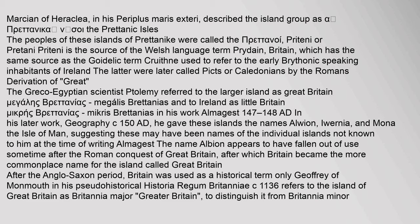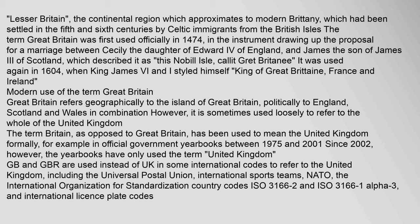The name Albion appears to have fallen out of use sometime after the Roman conquest of Great Britain, after which Britain became the more commonplace name for the island. Called Great Britain after the Anglo-Saxon period, Britain was used as a historical term only. The term Great Britain was first used officially in 1474, in the instrument drawing up the proposal for a marriage between Cecily, daughter of Edward IV of England, and James, son of James III of Scotland, which described it as 'this noble isle, call it Great Brittany.'